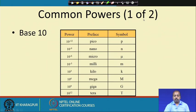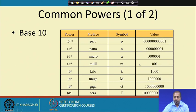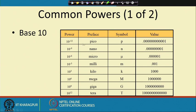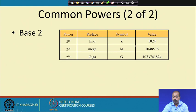Next: common powers. These are the different names for powers of base 10: 10^−12 is pico, 10^−9 is nano, 10^−6 is micro, and up to 10^12 is tera. They are represented by: small p, small n, micro symbol, small m, small k for kilo, capital M for mega, capital G for giga, capital T for tera.